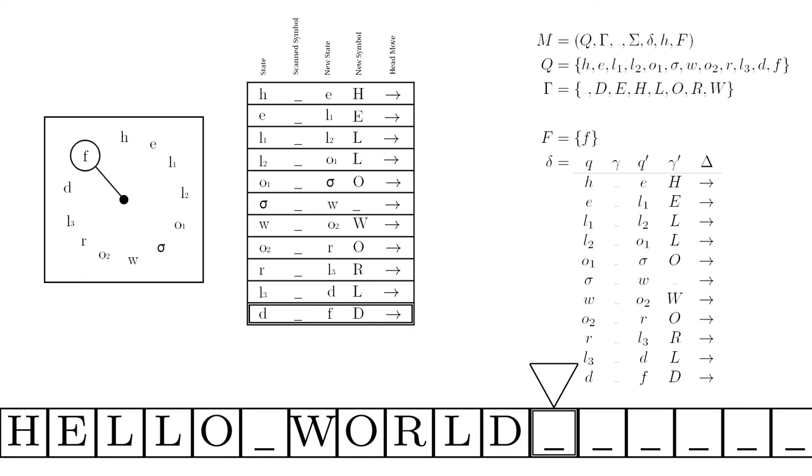If it reads anything besides a blank when in the initial state, it'll halt since we haven't defined an instruction for what to do in that case. So it doesn't matter what we define the input symbols to be, but typically the input symbols are everything in the alphabet except the blank symbol.